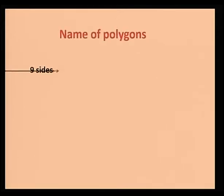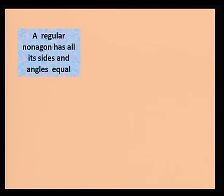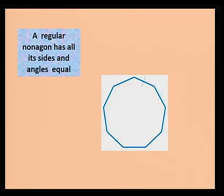A nonagon is a polygon having nine sides. Here you can see a polygon with nine sides. Again, if all the sides and angles are equal, we call it a regular nonagon.